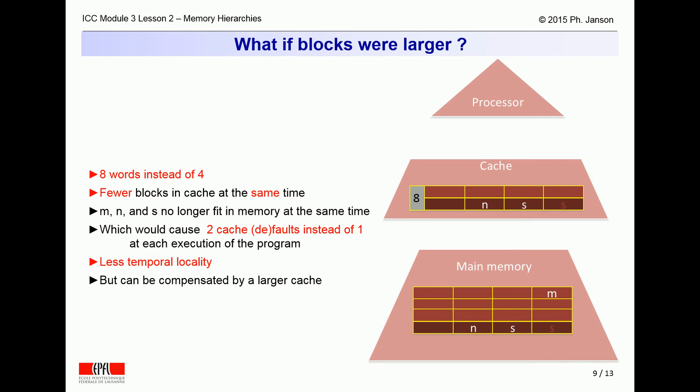Now, imagine for a second the opposite, cache blocks of eight words instead of four. The same size cache would then contain fewer, albeit larger blocks. As a result, the variables m, n, and s could no longer all fit in the cache at the same time, because they would be in different blocks, and only one of these blocks could fit in the cache at a time.